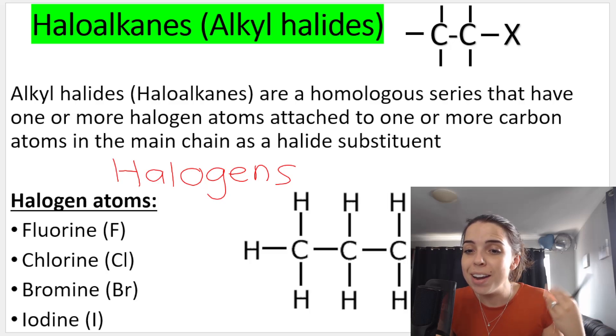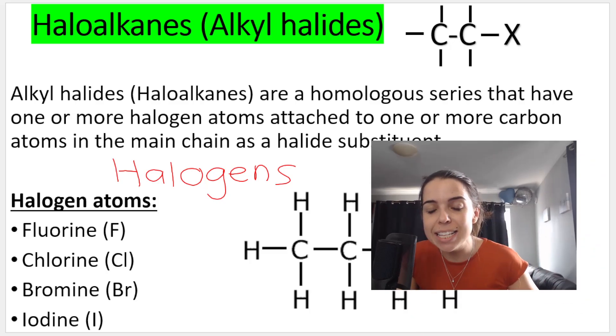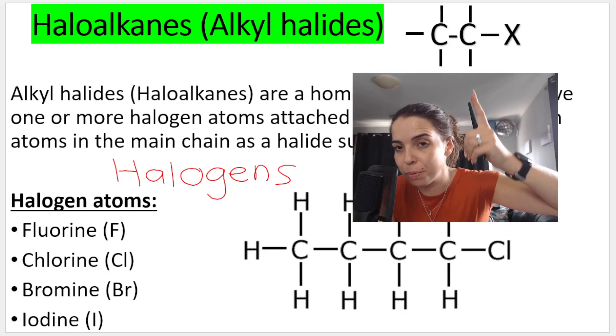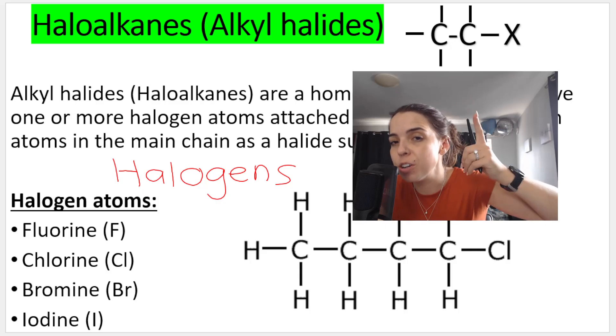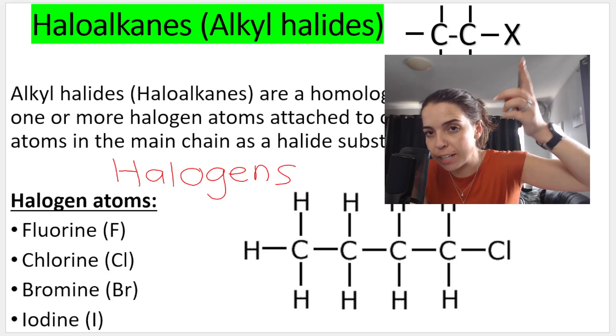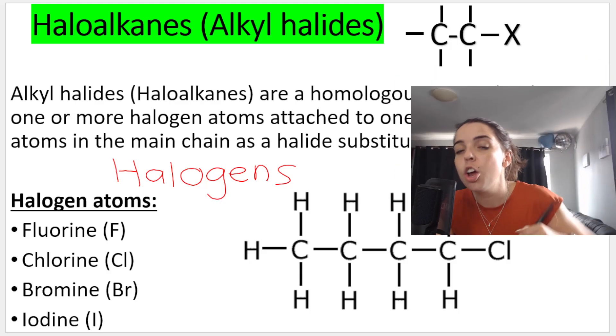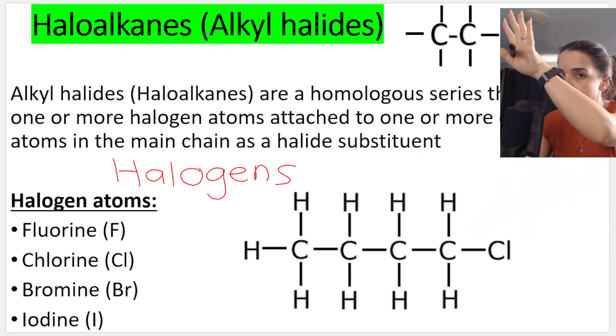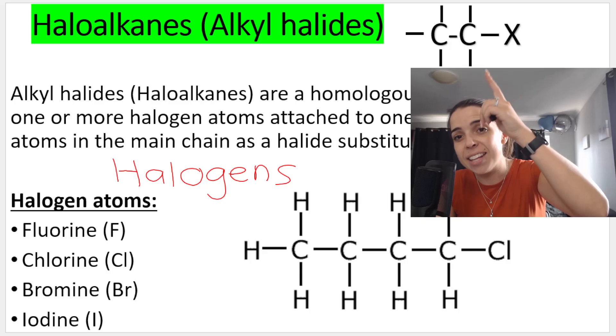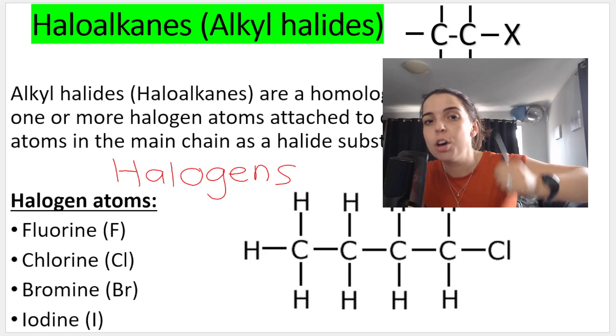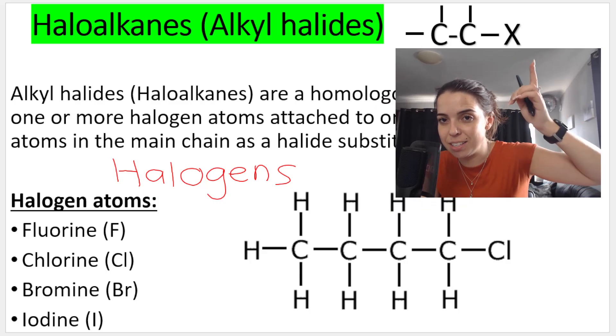Another important thing about haloalkanes or alkyl halides is this is the functional group. This is the structural formula of the functional group. The X basically indicates the halogen. When we did alkanes, if we block out that X, that was the functional group. When I add the X in, this is the structural formula of the functional group of haloalkanes.